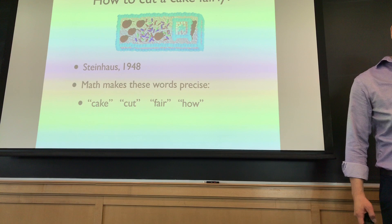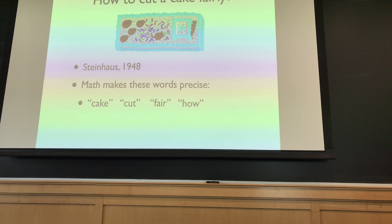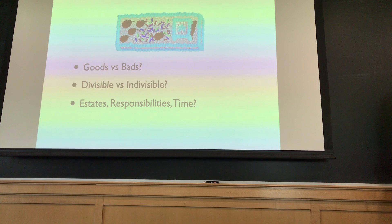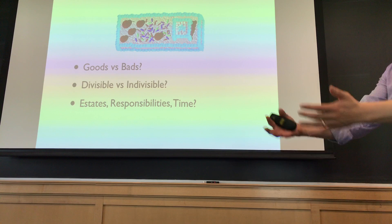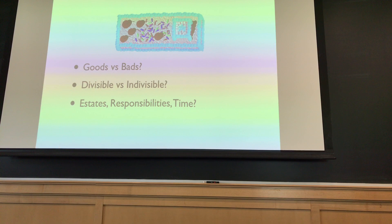There are lots of things to make precise here — that's what makes math wonderful. Math gives us language and tools to make words precise. We have to define: what do you mean by cake, cut, fair, and how? Cake could mean something you desire, like actual cake, or something you don't want more of — like rent.